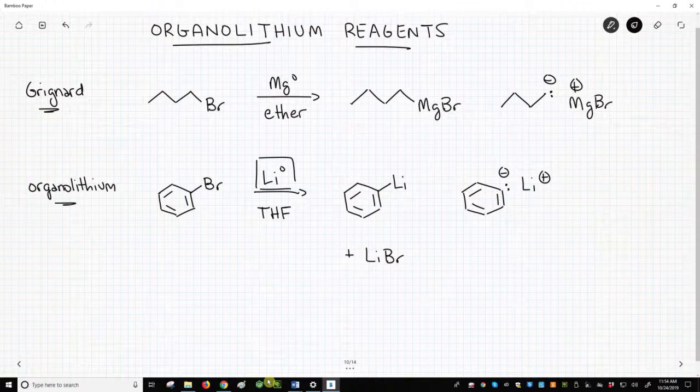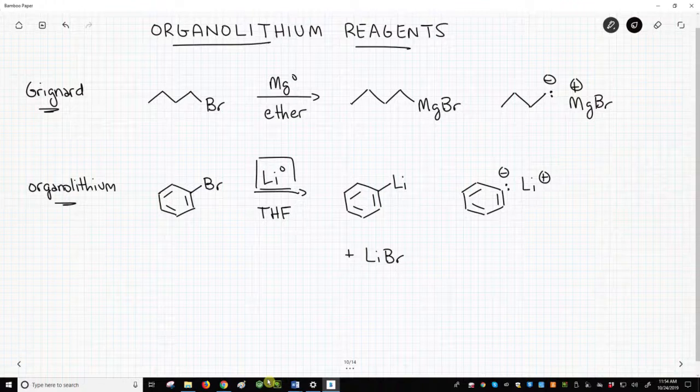Lithium only has one electron to spare, so we actually need two atoms of lithium zero to get our two electrons to form a product. The second atom of lithium binds the bromide.